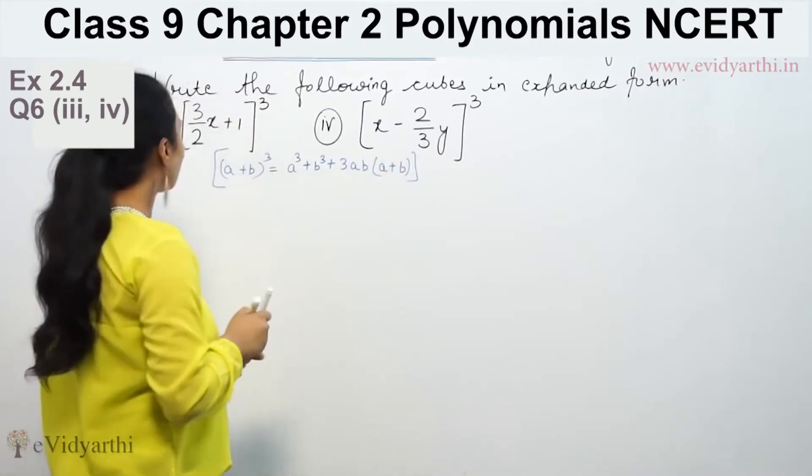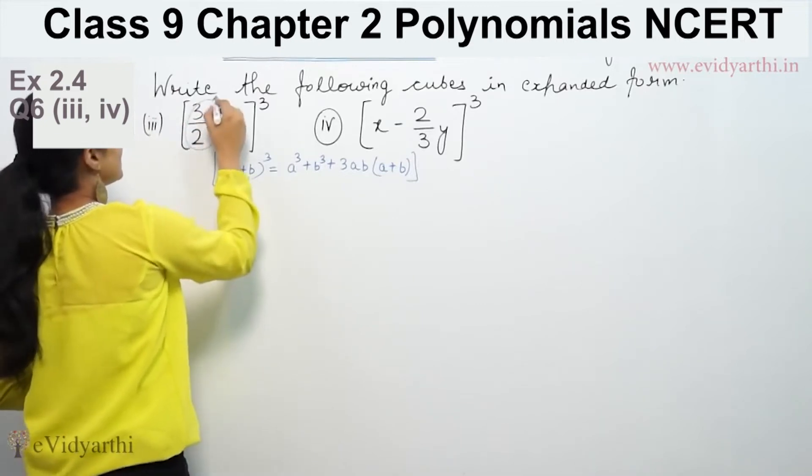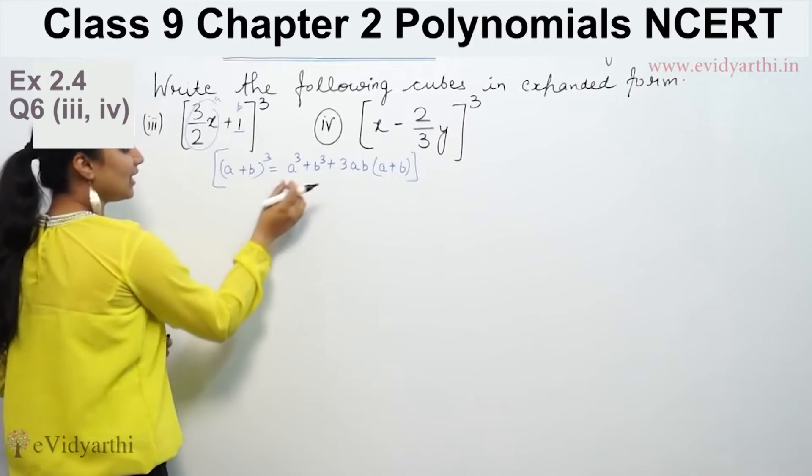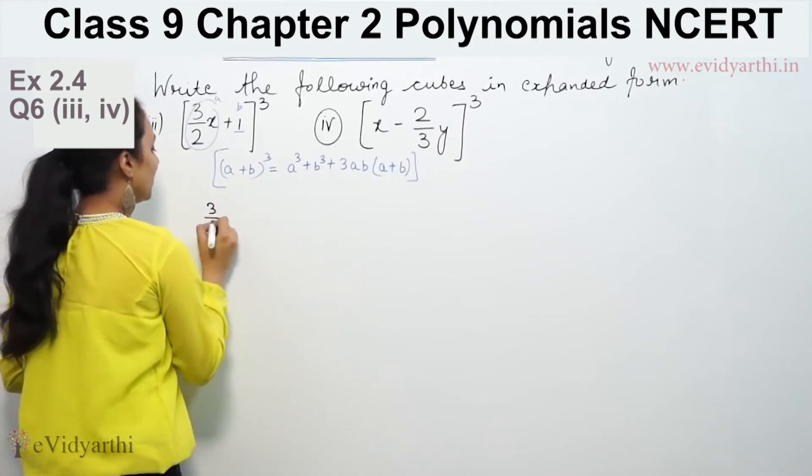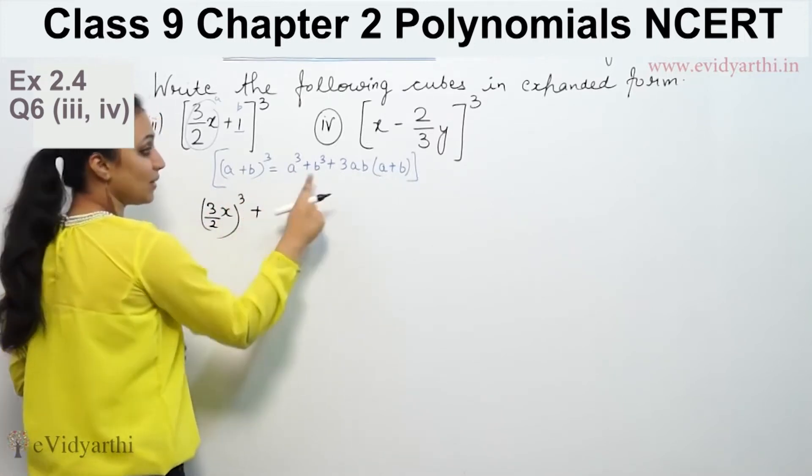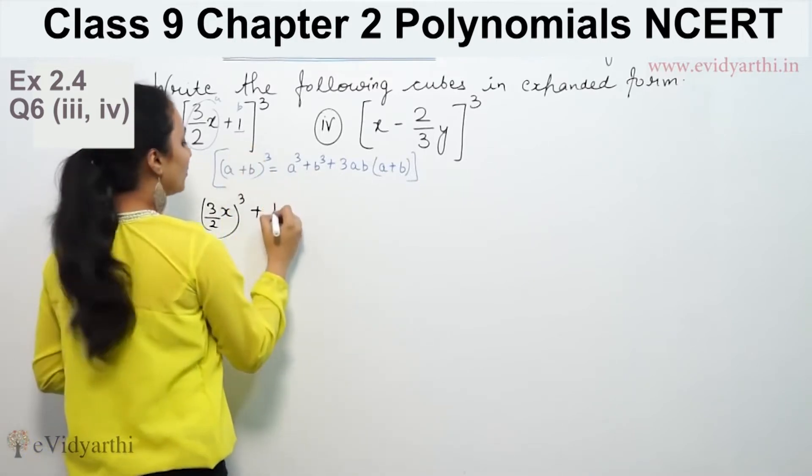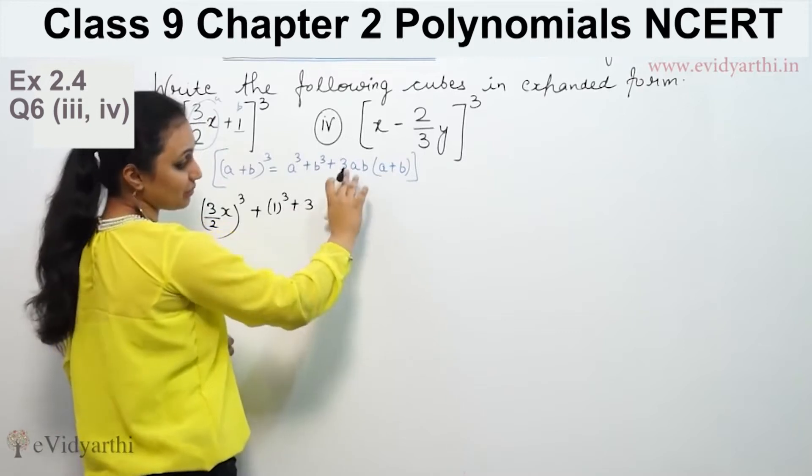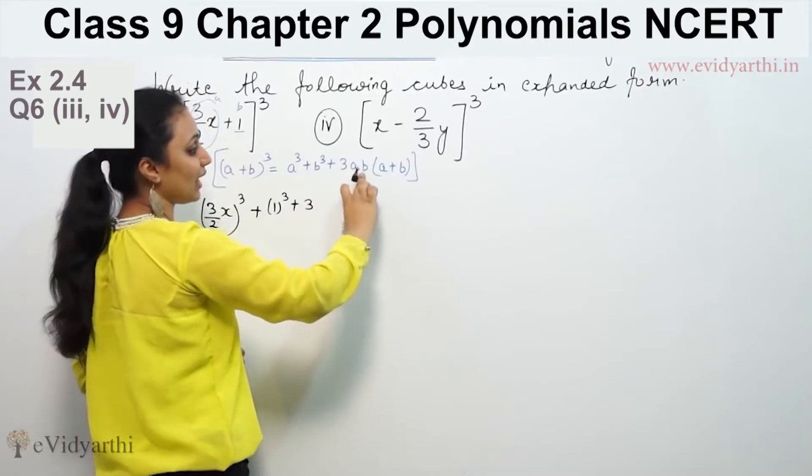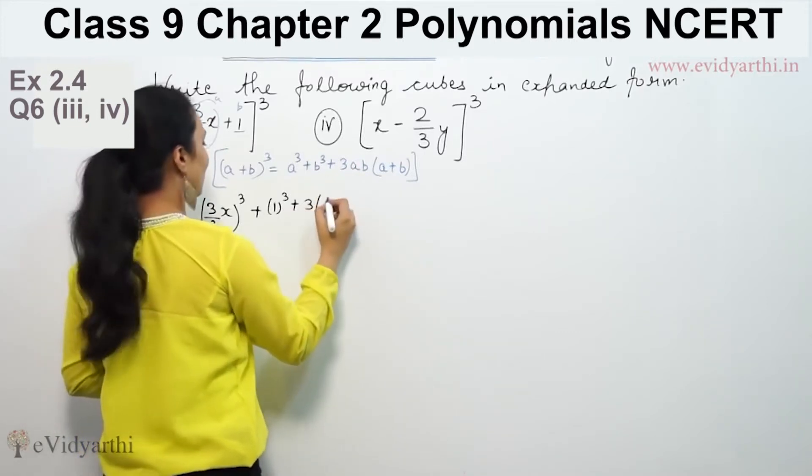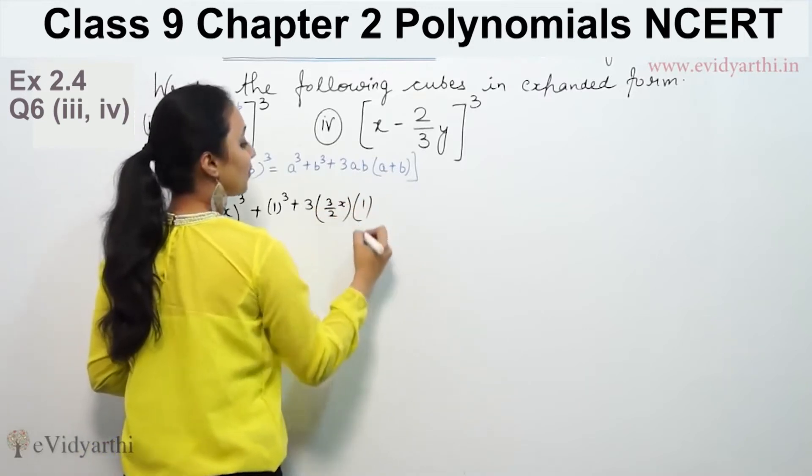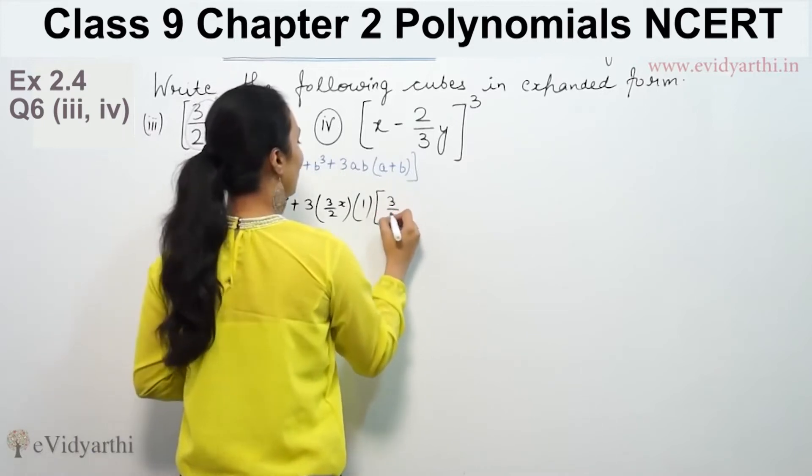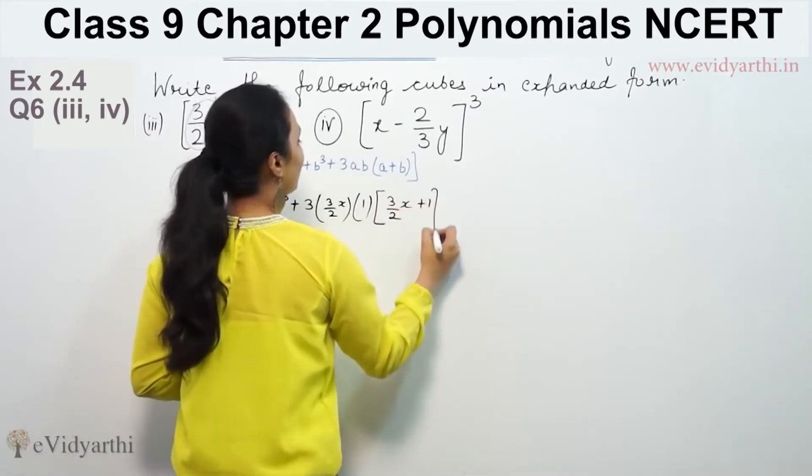Here this is A, this is B, this is plus. We have (3/2x + 1)³ where A is 3/2x and B is 1. So (3/2x)³ + 1³ + 3AB where 3 × A × B means 3 × (3/2x) × 1, in bracket (A + B), which is 3/2x + 1.